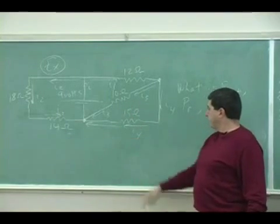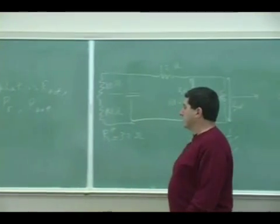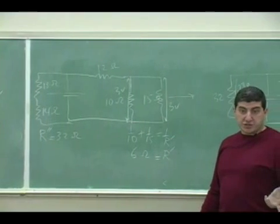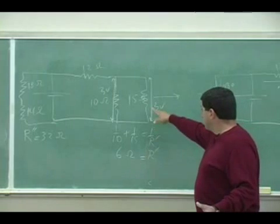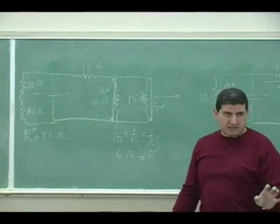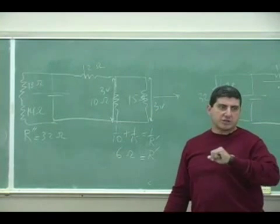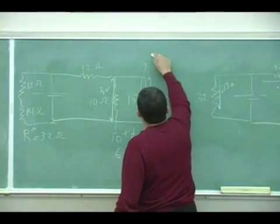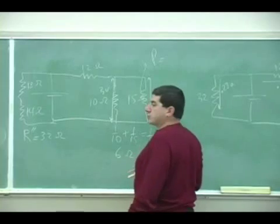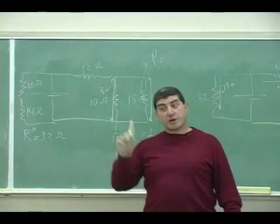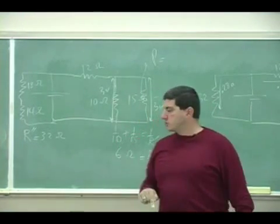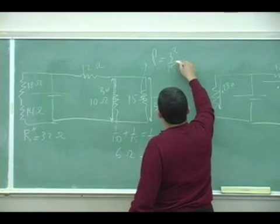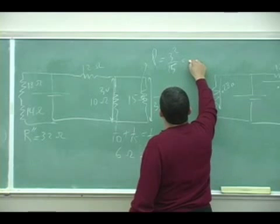So I can find the, if it's not asking me for the current in that resistor, I can skip that step, and I can just go to the power, right? I can say the power here is what? Which equation would I use? V squared over R, right? So 9 over 15, that's 0.6.